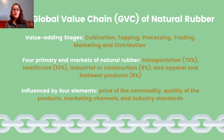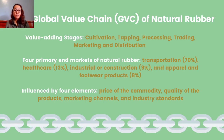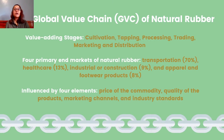The fifth stage — marketing and distribution — has four existing primary end markets for natural rubber: transportation, healthcare, industrial or construction, and apparel and footwear. Transportation is the most significant, with an estimated market demand of 70%. Healthcare accounts for 13%, industrial or construction for 9%, and apparel products for the remaining 8%. All end markets can be influenced by four elements: the price of the commodity, quality of products, marketing channels, and industry standards.